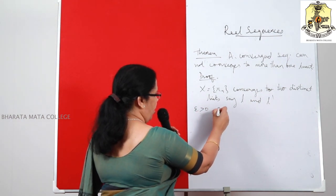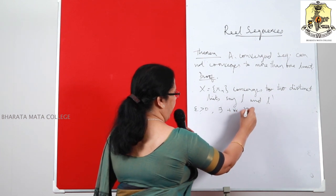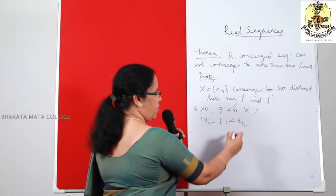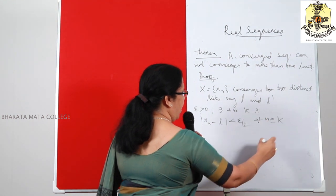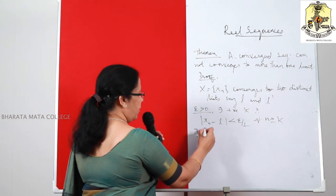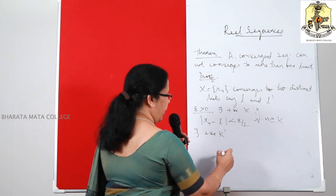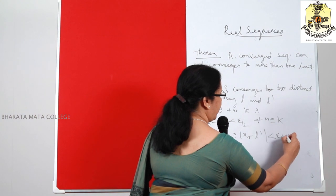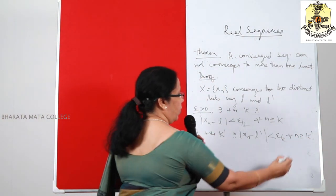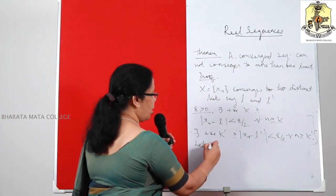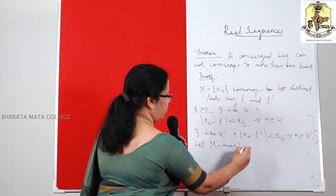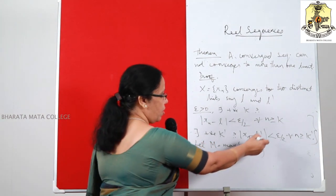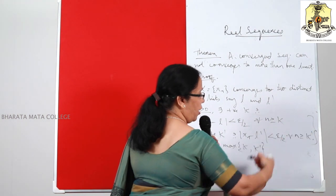Then by the definition of sequence X_N converging to L, we get: for any epsilon > 0, there exists a positive integer K such that modulus of X_N minus L is less than epsilon/2, for all N ≥ K. As well as, for the same epsilon > 0, there exists another positive integer K dash such that modulus of X_N minus L dash is less than epsilon/2, for all N ≥ K dash. Now we have two inequalities. Let M be the maximum of K and K dash, so that both inequalities are satisfied for all N ≥ M.